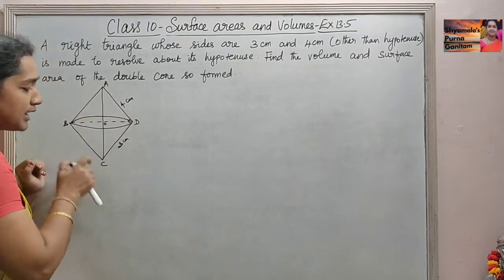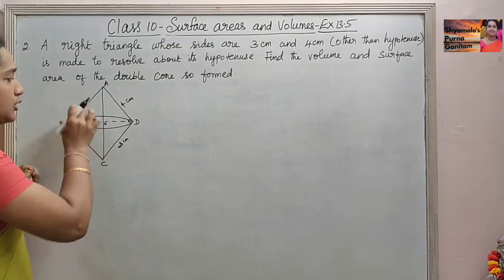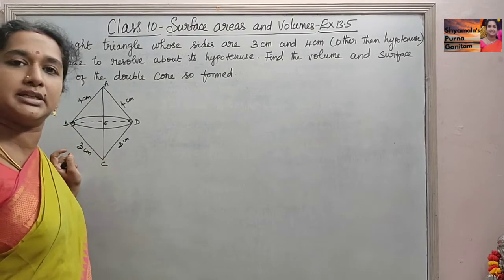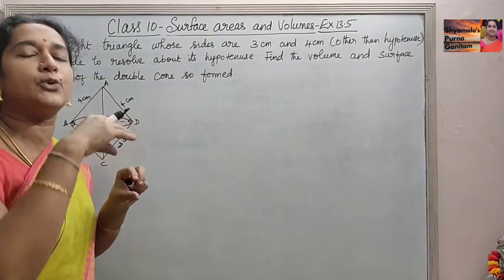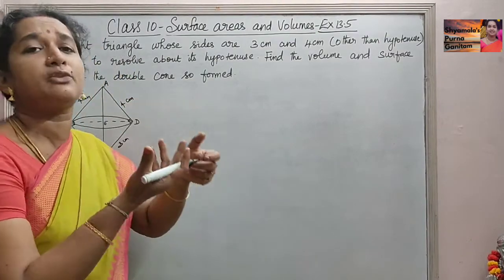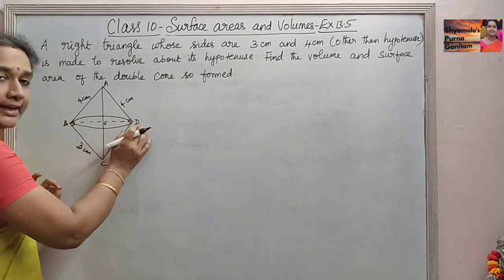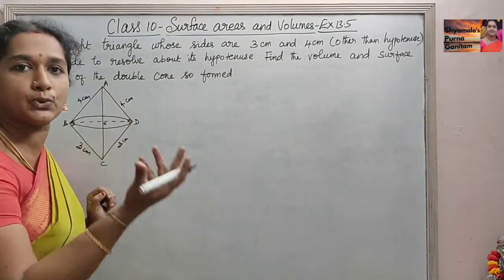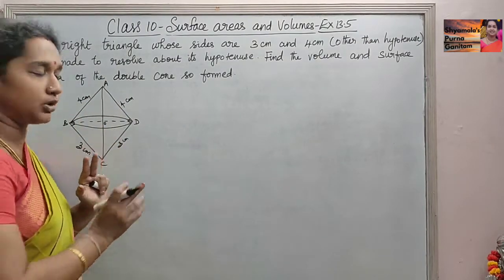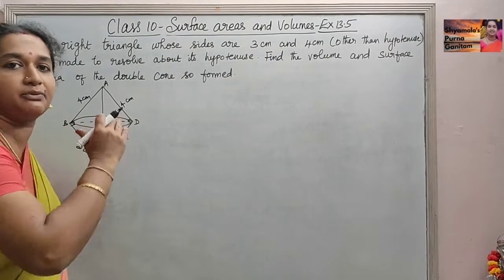We take it as a right angle triangle ABC, where AC is the hypotenuse. The lengths AB and BC are given as 4 cm and 3 cm respectively. They are rotating along these sides to form two cones — a double cone. ABD is one cone rotating along 4 cm, and when rotated along 3 cm we get the other cone, with 4 cm as the slant height for one cone and 3 cm as the slant height for the other.